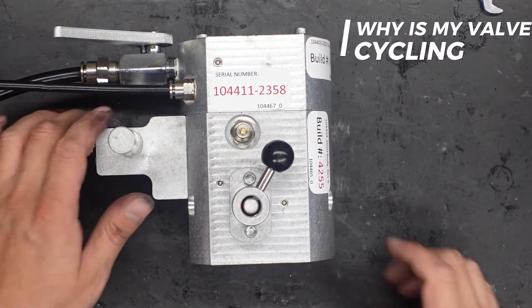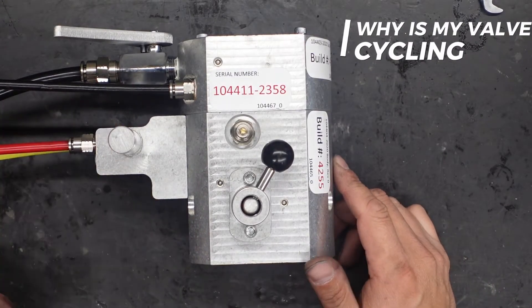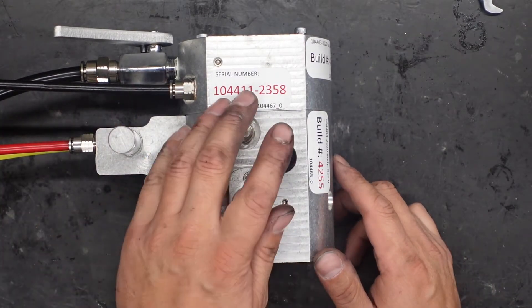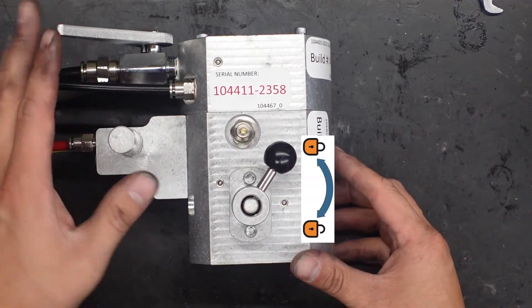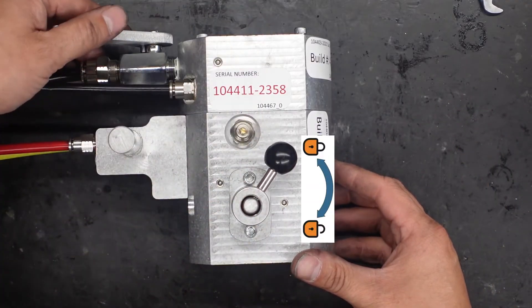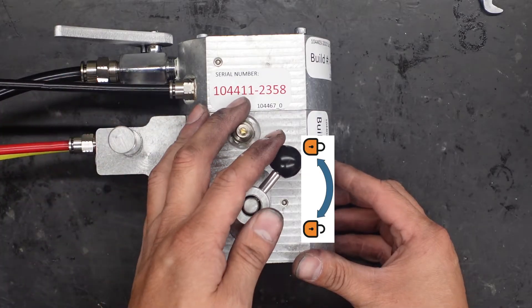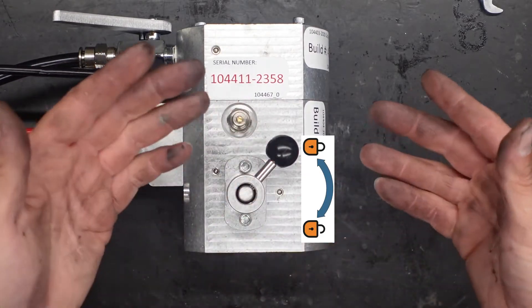One of the biggest questions we get from customers is why is my valve cycling. Your valve should never cycle. So you have the valve in on position, you go to unlock the cover which inflates or deflates the seal.